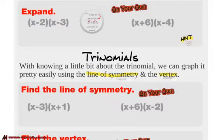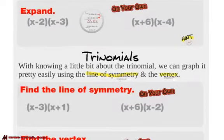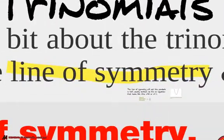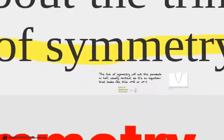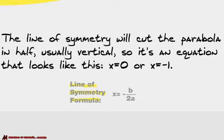Let's talk a little bit more with trinomials. We can get some information from the equation and graph it using our line of symmetry and our vertex. You've heard about a line of symmetry in the past. With parabolas and trinomials, you will need a line of symmetry in order to draw the parabola accurately. It's just a vertical line — an equation that looks something like x equals 0, x equals negative 1, and so forth.